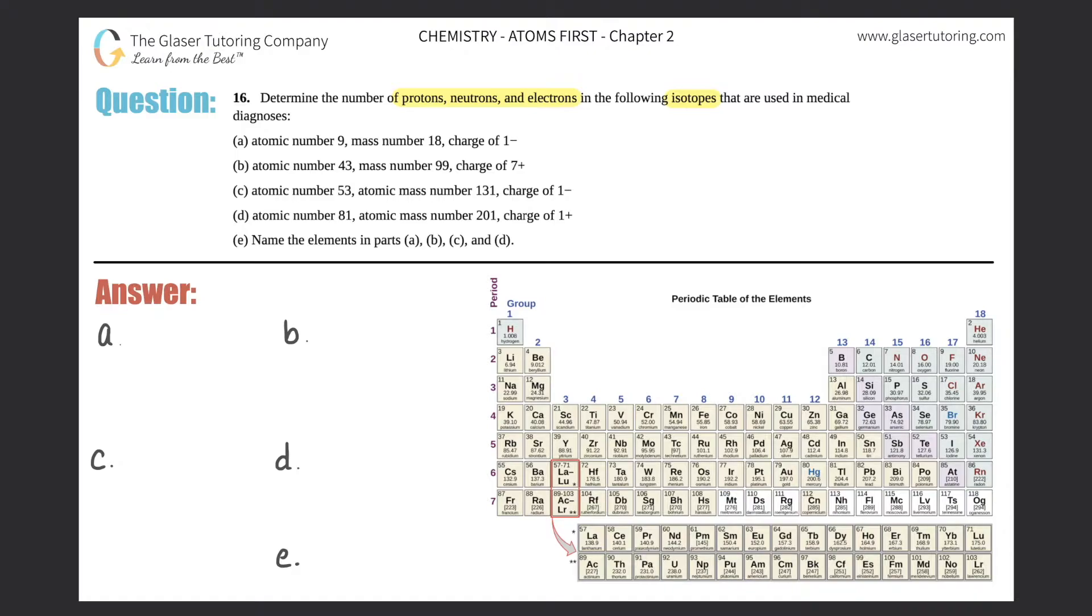So A, they say that we have an atomic number of 9, a mass number of 18, and a charge of negative 1. So right off the bat, we should know that the atomic number always equals the number of protons. So for here, the protons - so I'll just say P, N, and E, protons, neutrons, and electrons. So the protons comes from the atomic number, which is 9.